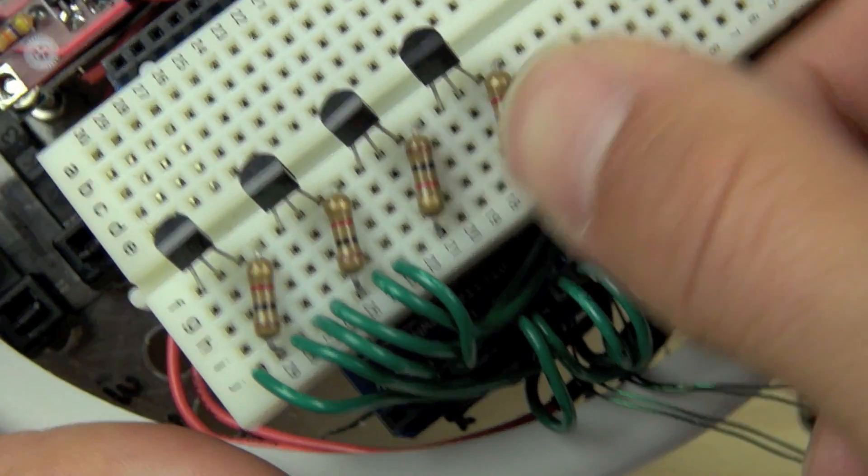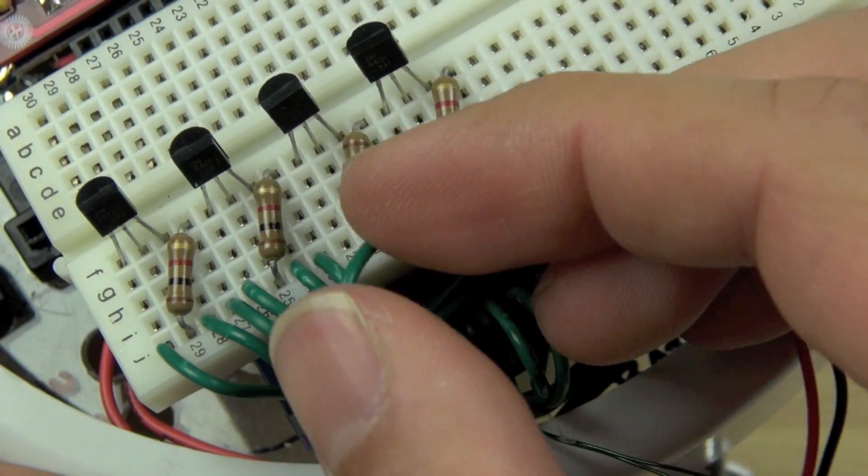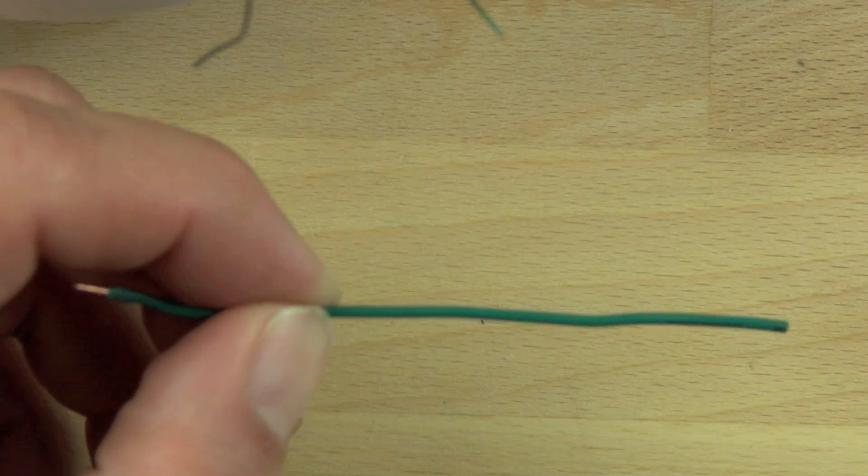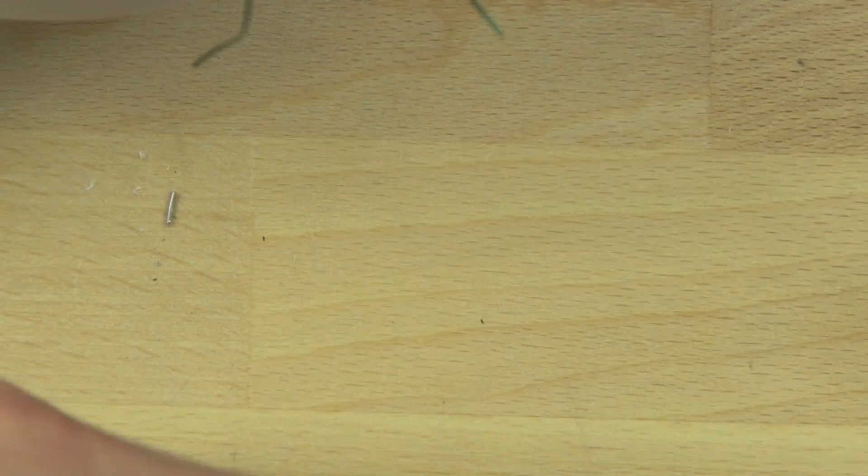We're connecting the 10k ohm resistor just like we did for the sound module to the base or the center wire of our transistor. And then we're cutting 22 gauge hookup wire and connecting that to the pinouts on our Arduino.